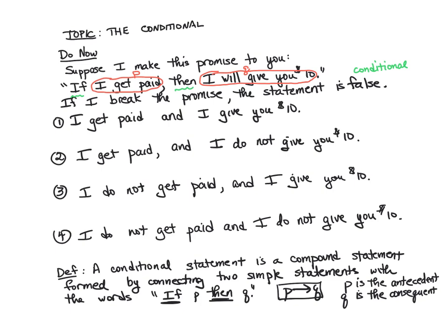Sometimes when we write things in words, the antecedent and the consequent are not in order. We could say Q comma if P. So the antecedent can be at the end of the statement, as you know in English. But if we have Q if P, it implies if P then Q.